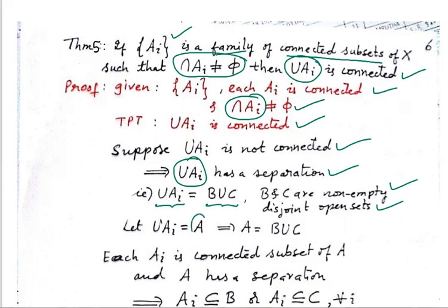Now, this union Aᵢ, let us call it A. So A = B∪C, where B and C are two non-empty, disjoint, open sets. Since each Aᵢ is a connected subset of A, and A has a separation B∪C, by one of the theorems, each connected subset will be either completely in B or completely in C.